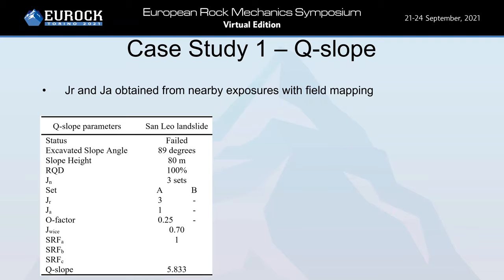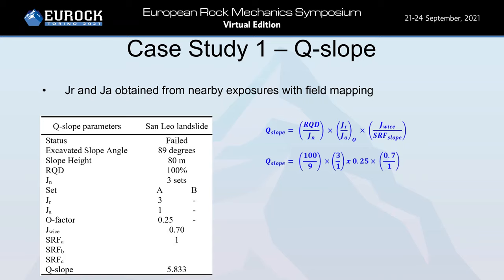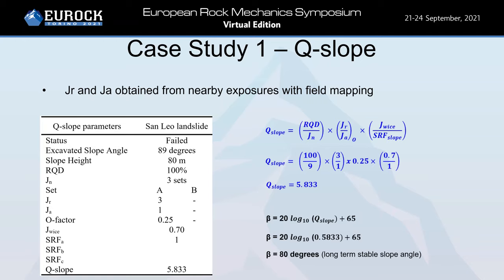The Q-slope method was applied to the San Leo case study. The pre-failure cliff angle was 89 degrees — effectively vertical. The Q-slope parameters are shown in the table on the left. With the exception of joint roughness and joint alteration (JR and JA), which were obtained from nearby field mapping exposures, the remainder of parameters were estimated using UAV photogrammetry. A Q-slope value of 5.83 was obtained. Beta, representing the long-term stable angle for slopes, was estimated to be 80 degrees, which is almost 10 degrees shallower than the pre-failure cliff angle.